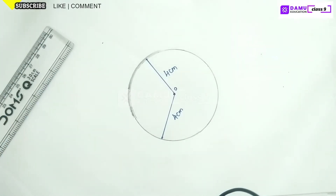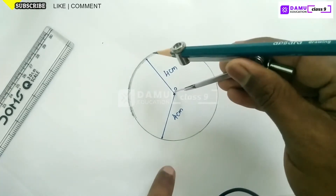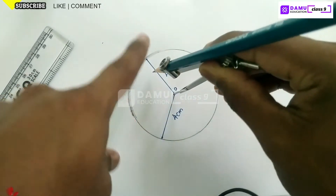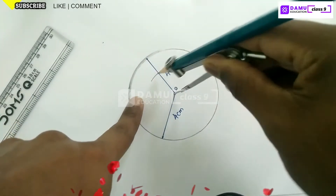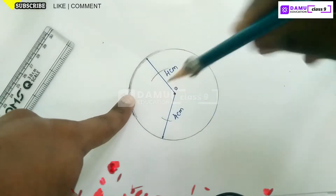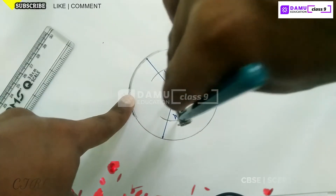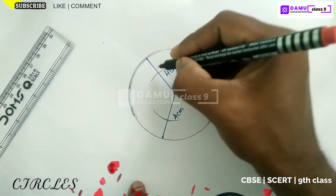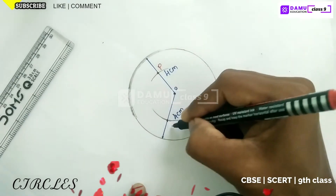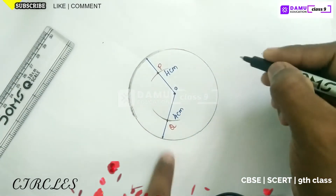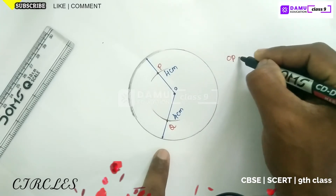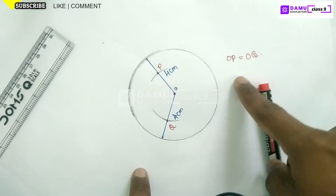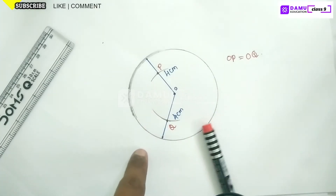From center O, cut two arcs with the same equidistance. Cut here and cut here. Let's keep these points as P and Q, where OP equals OQ. These are the conditions — OP is equal to OQ.